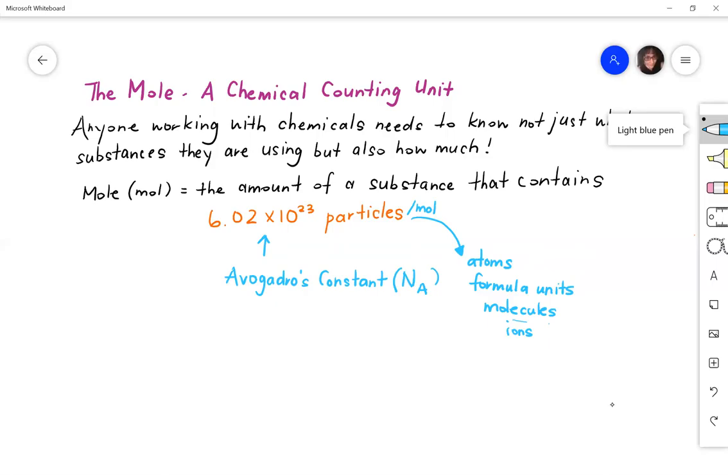The mole is in units of mole, we give that the variable n in the equation, and then the particles themselves that we'll be calculating will have the variable capital N. So we come up with an equation that we can use to calculate, which is known as N is equal to n times Na.